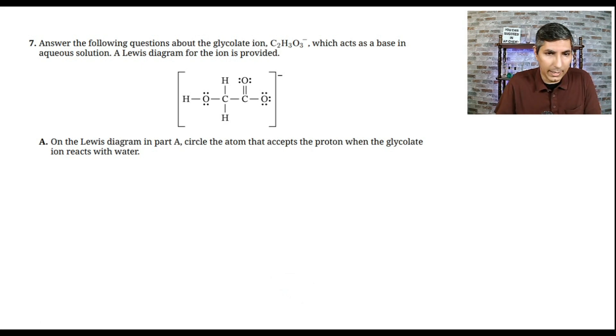Question seven involves the glycolate ion, C2H3O3 negative. It acts as a base in aqueous solution, and we have a Lewis diagram for the ion shown in the question. Part A says on the Lewis diagram, circle the atom that accepts the proton when the glycolate ion reacts with water. One thing we need to realize is that an acid often has a COOH tail on the end of it, and I see a COO where an H could very easily come in. So that last oxygen that has the six valence electrons around it, that's the one you want to circle. That's the one that is going to be attracting that H plus when it accepts the proton. If you circled that one, give yourself a point for part A.